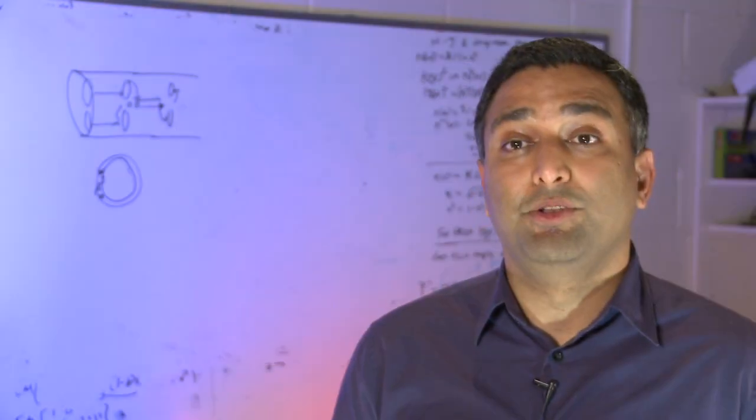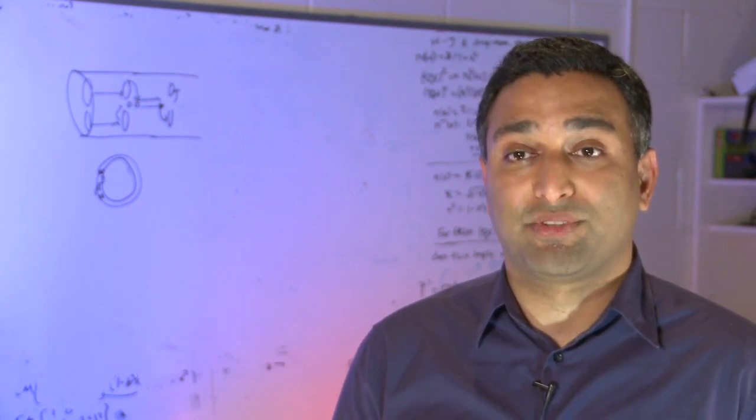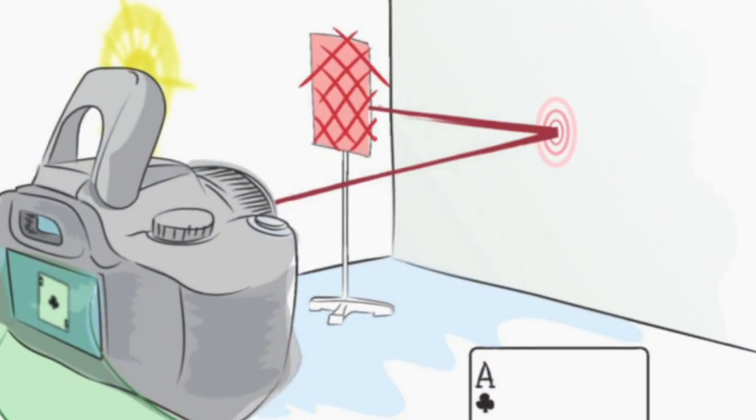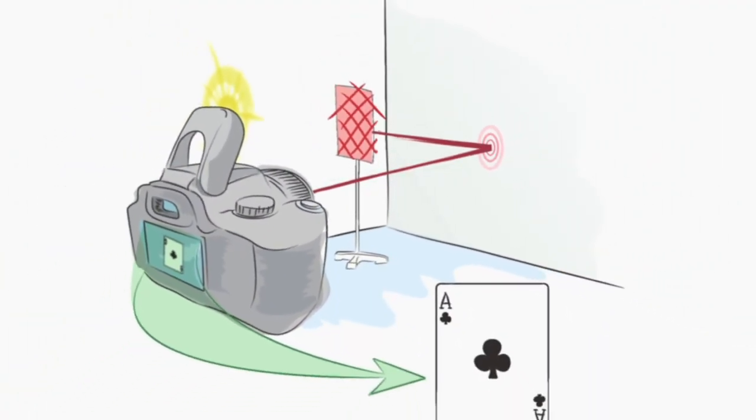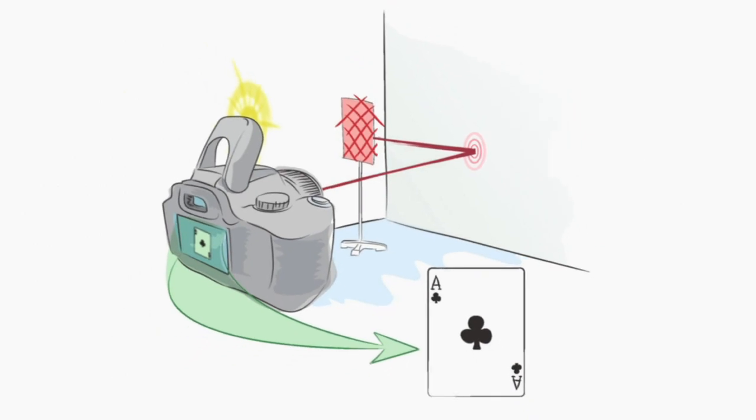We have created a new form of photography, femto photography, that allows us to look around corners and beyond the line of sight. The idea is to use extremely high-speed cameras and light sources that can exploit multiple bounces of light.